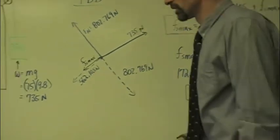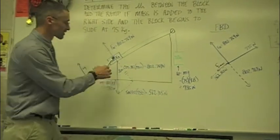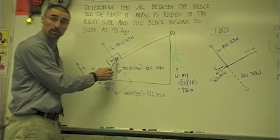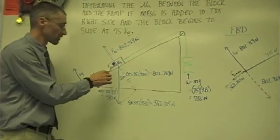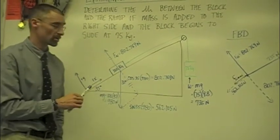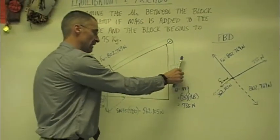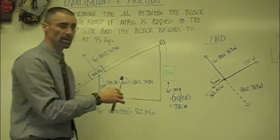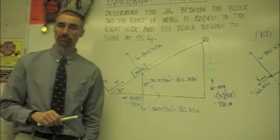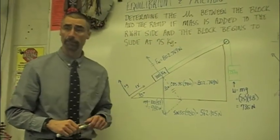So what does that basically tell us? We could set this up, if we wanted to know this coefficient of friction between the static, between this and that surface, we could set this up, keep adding mass, until we get to the point where it breaks over, and we could calculate the coefficient of static friction between the block and the ramp.